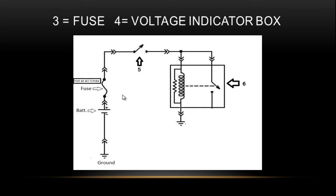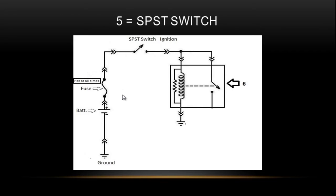Number three is the fuse. That's what protects the circuit. Number four was the voltage indicator box, number six. That reads hot at all times. That was number five. Number five was a single pole, single throw switch. We're going to call this the ignition switch in this circuit. That was number six. Single pole, single throw relay. That's pretty much all the components minus this ground, which we covered it for number one.